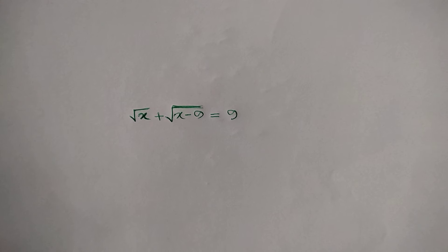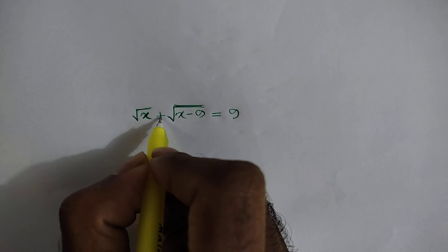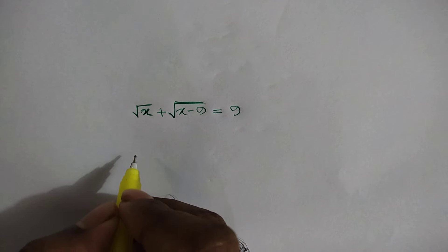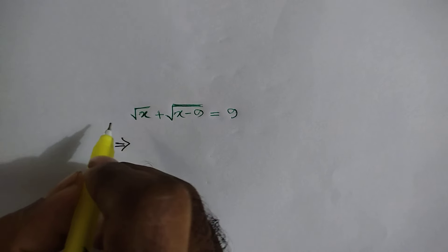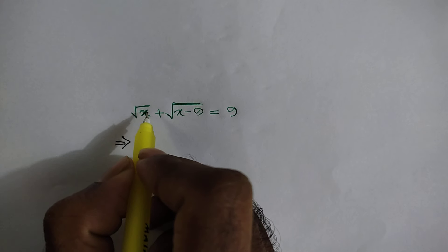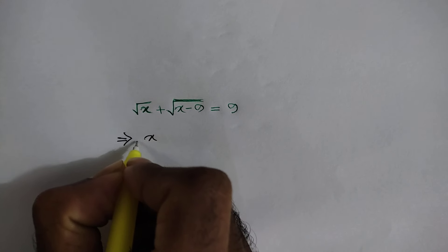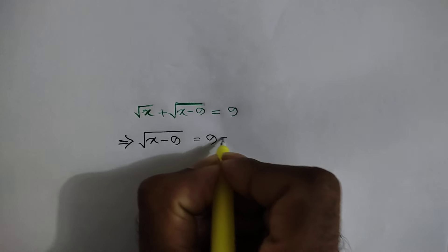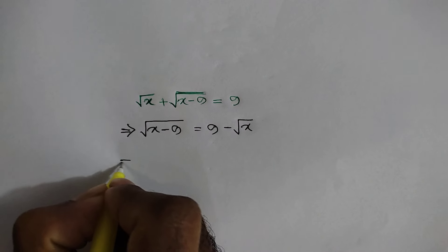Hi everyone. In this video I am going to show how to solve square root of x plus square root of x minus 9 is equal to 9. Find the value of x. Taking this square root of x to the right side, we will write square root of x minus 9 is equal to 9 minus square root of x.